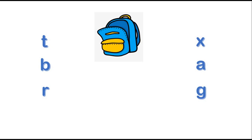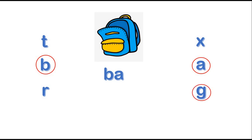What is this? It's a bag. What is the first letter? B. What sound does it make? B. What is the second letter? A. What sound does it make? A. What is the third letter? G. What sound does it make? G. B, A, G. What's this? Bag. Let's read the word together. Bag.